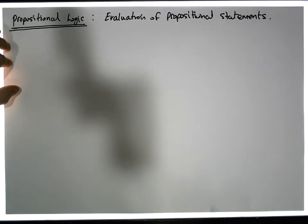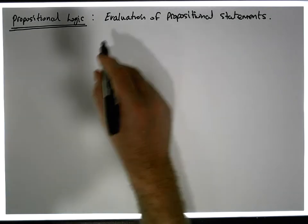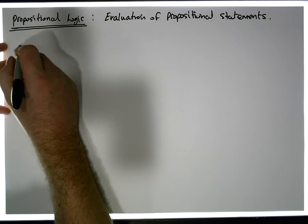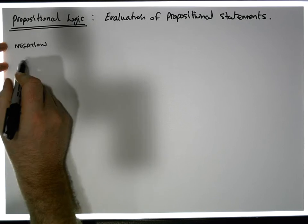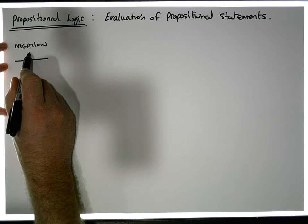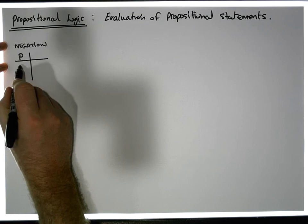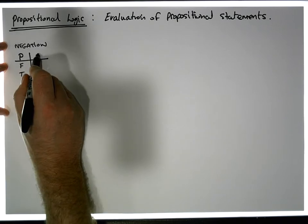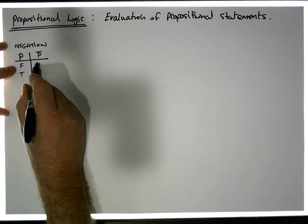No matter what we do, we have to recall our four key connectives and how they work with respect to our propositions. So remember negation — we have the concept of negation of a proposition, and we have a truth table that shows us how negation works. It works on a single proposition; it's a unary operator. The proposition can either be false or true.